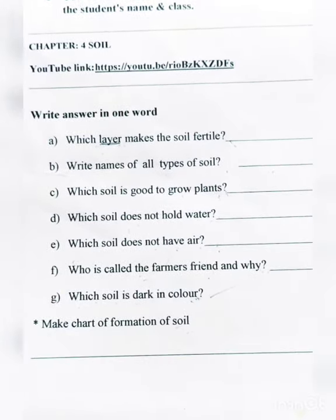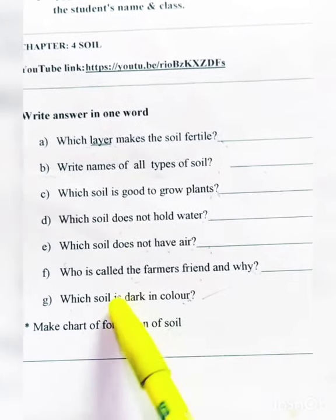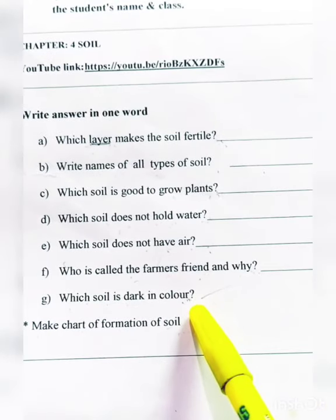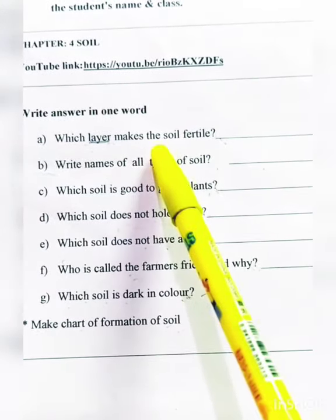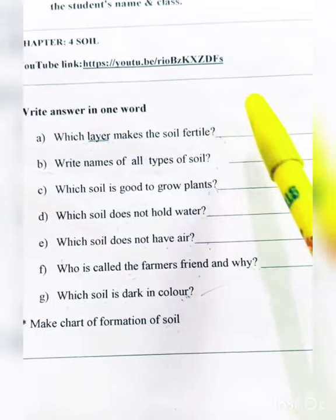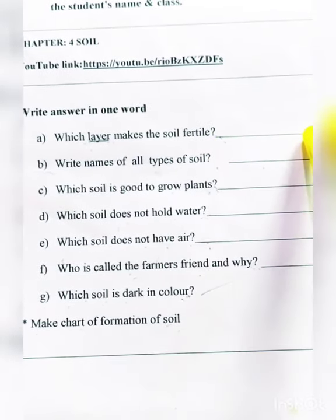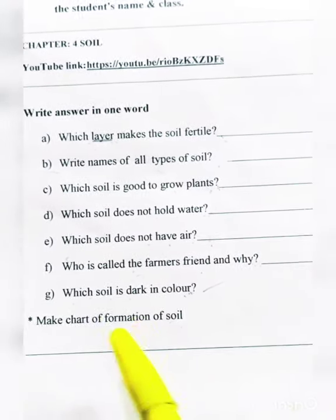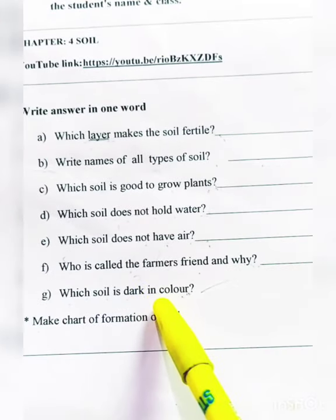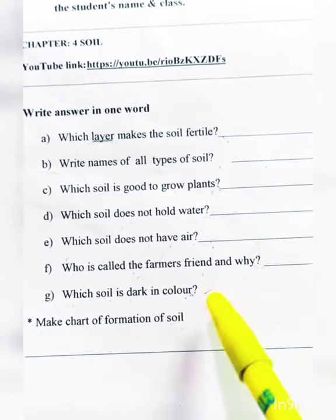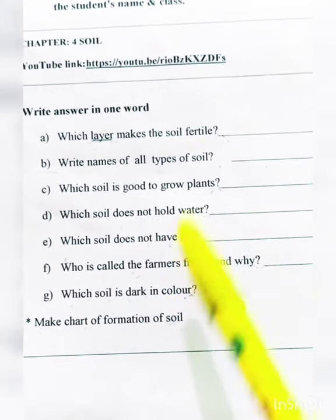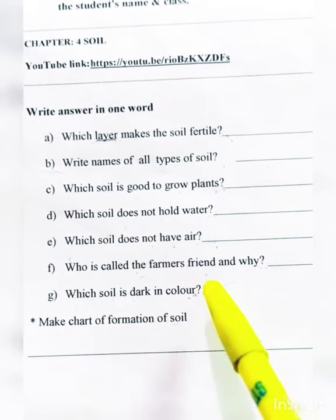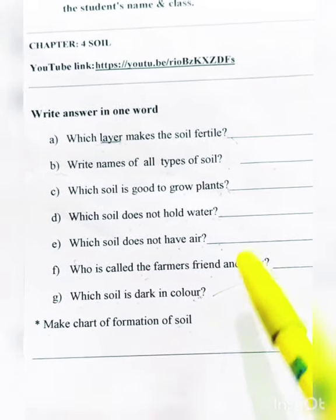Which soil is dark in color? We have studied that humus is made of dead animals or plants, which means it is dark in color. The soil that is most dark in color is the soil that contains humus, which is the fertile soil.